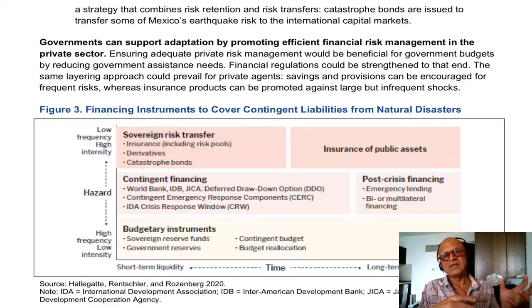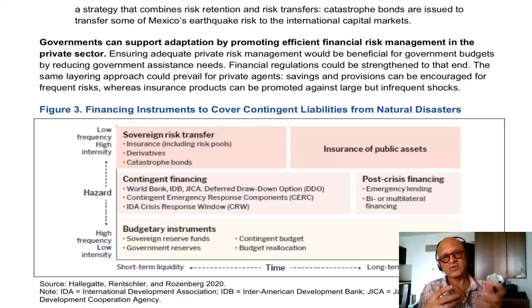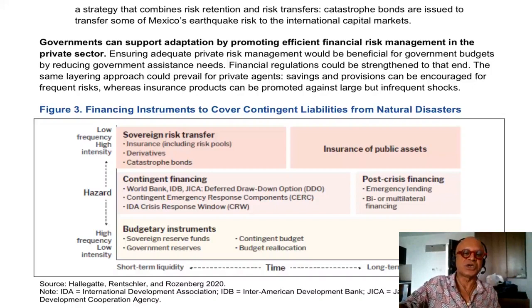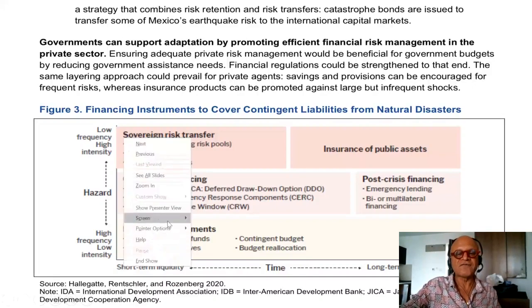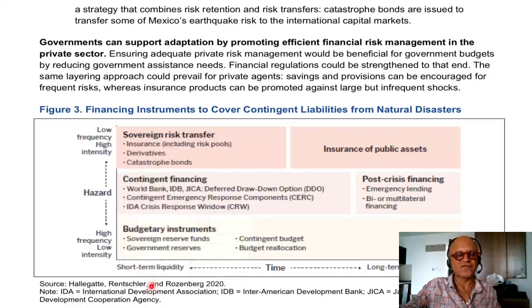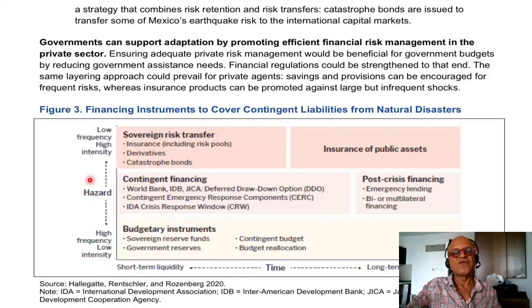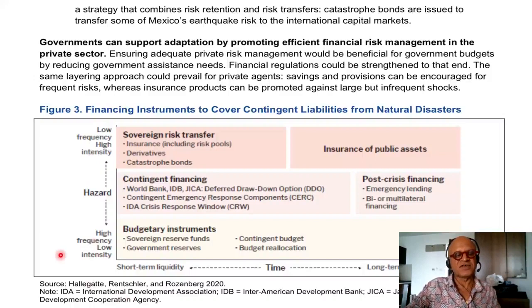These are extensions from disaster recovery and disaster resilience strategies, but they are not so different from adaptation to climate change in that sense. Here we are looking at a figure showing a schematic of short-term liquidity to long-term financing needs, on an axis from high-frequency low-intensity climate hazards to low-frequency high-intensity — that is, low-probability high-impact versus highly-probable low-impact kind of phase space.